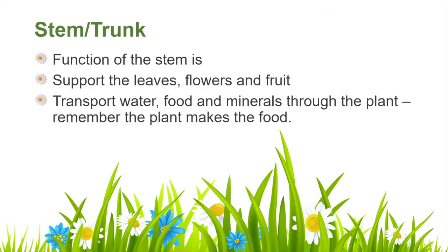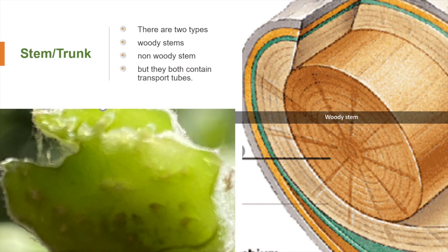The job of the stem — or its function — is to provide the plant with support. The trunk also provides structure and support for the whole tree, including its stems, leaves, fruits and flowers. Both woody and non-woody stems contain transport tubes. One set of tubes carries water and minerals from the ground up to the leaves. The leaves are where the plant makes its own food, and that food is then transported back down the plant through another set of transport tubes. In the woody stem, you can see them coloured in yellow and green.